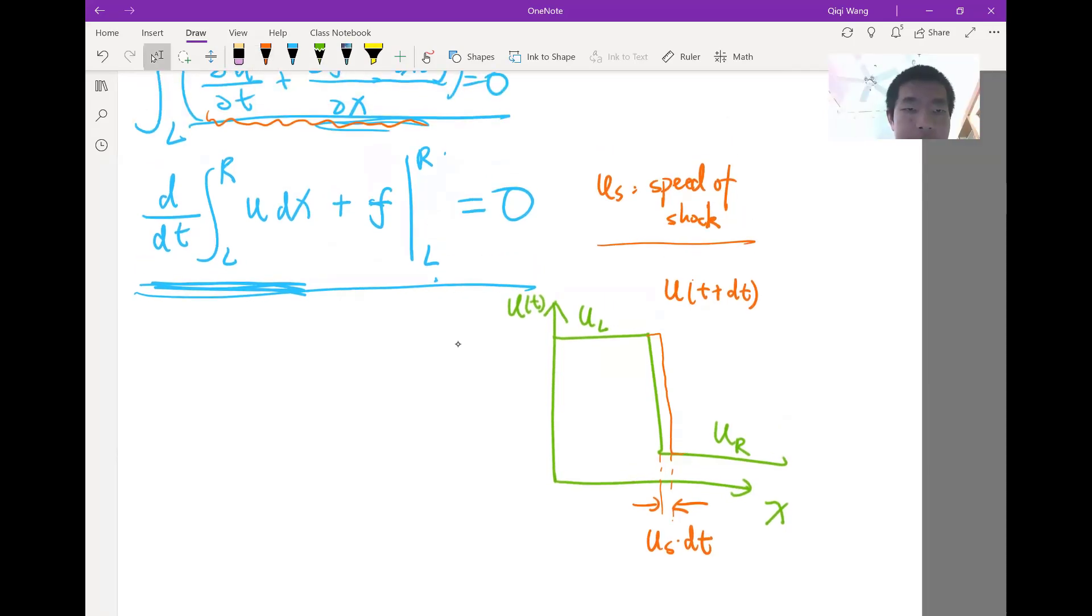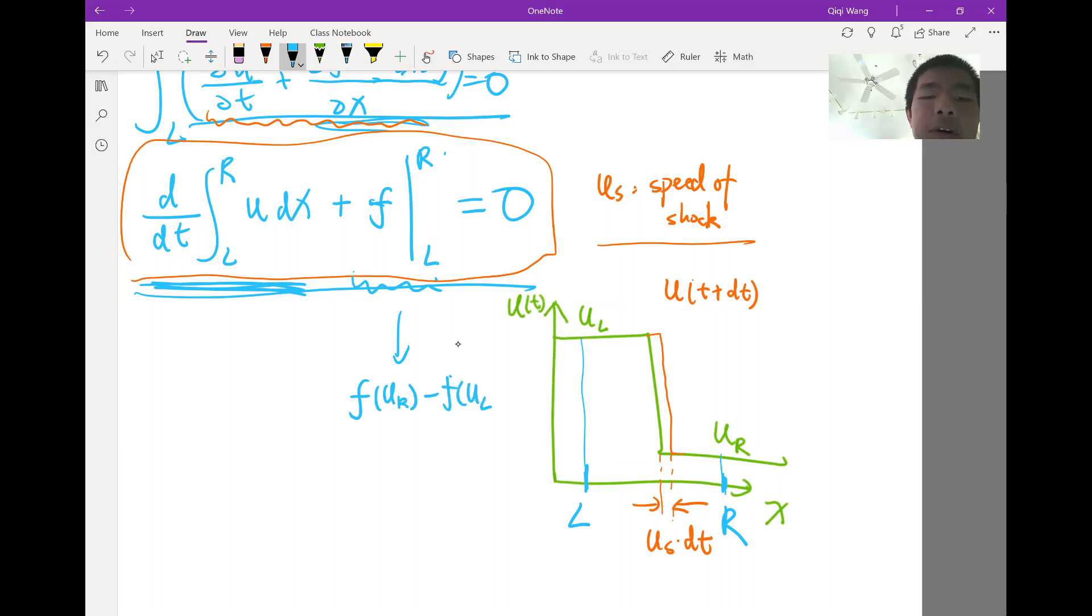So now let's actually look at the integral form of the equation. And let's set an arbitrary place over the left shock and call it L. Let's set another arbitrary place over the right and call it R. Now over this finite region, there is going to be a difference between the flux over the left and the flux over the right. So this term would be f(ur) minus f(ul).